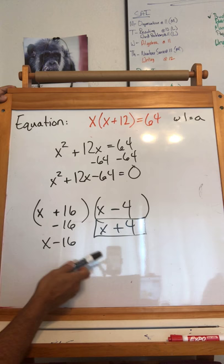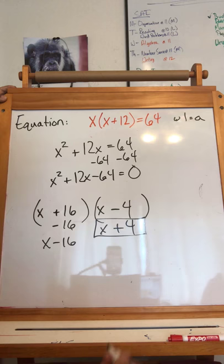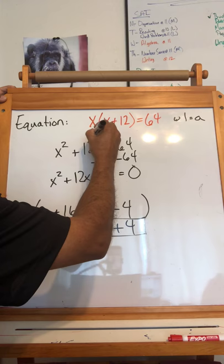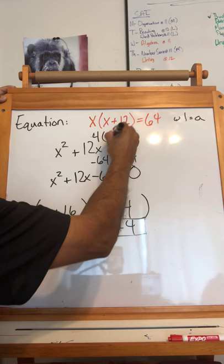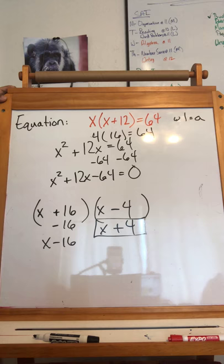x is 4. Okay? I get two answers, but I know this one is not the one I'm looking for, because it's a negative. I need a positive number, because I'm measuring area, so x is 4. 4 times 4 plus 12 is 16 equals 64, okay? That's the complicated way. That's a little bit harder.